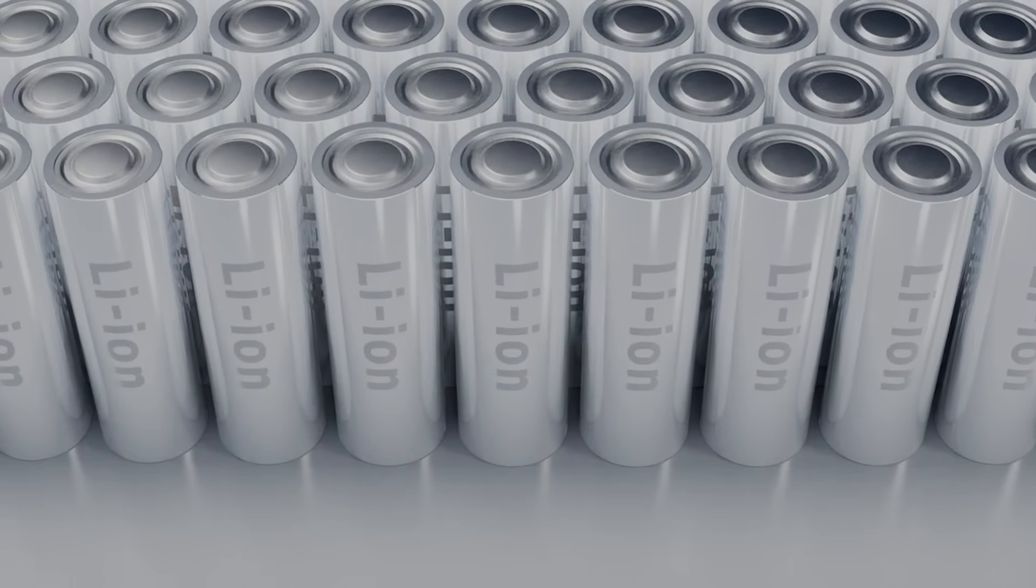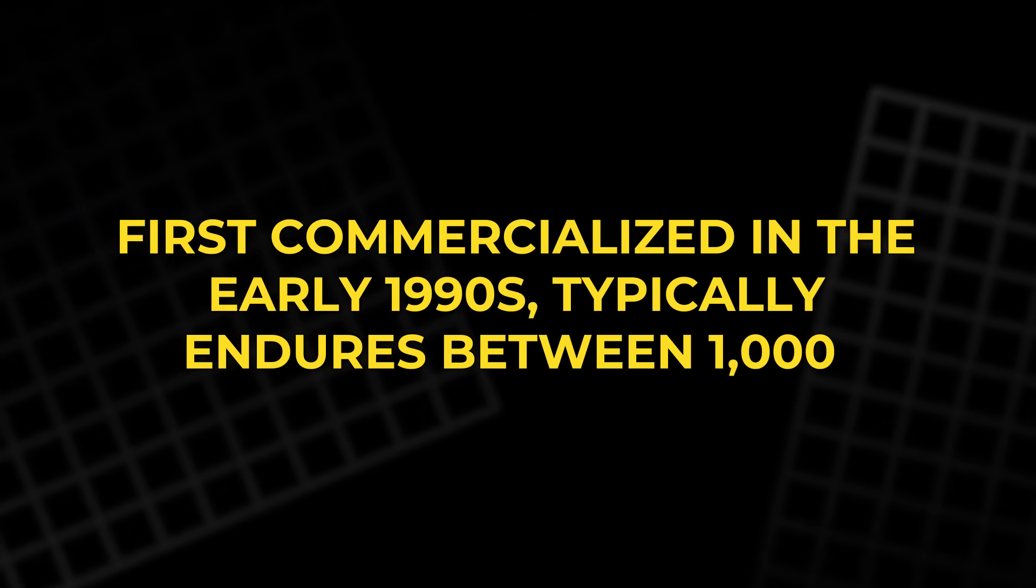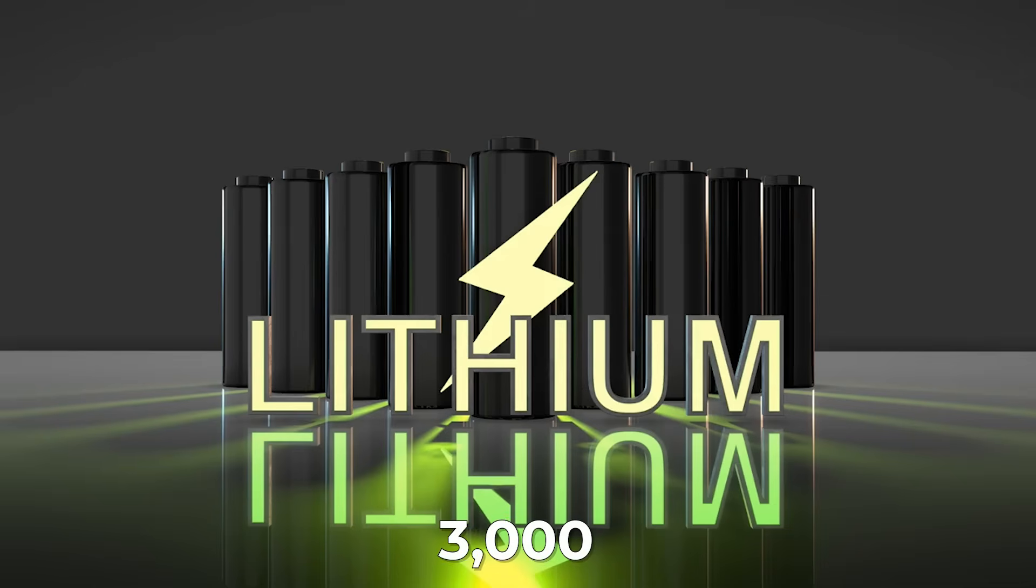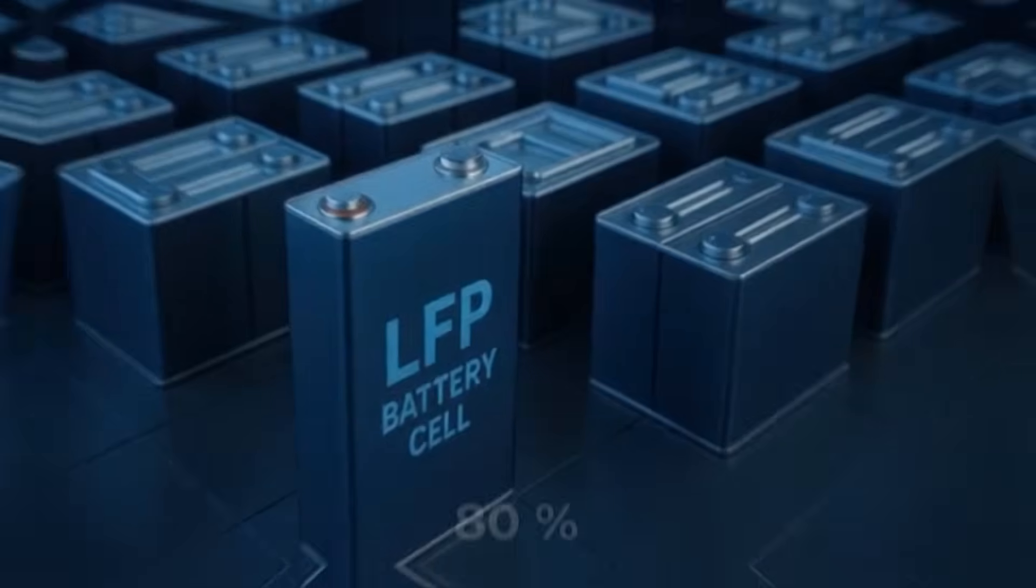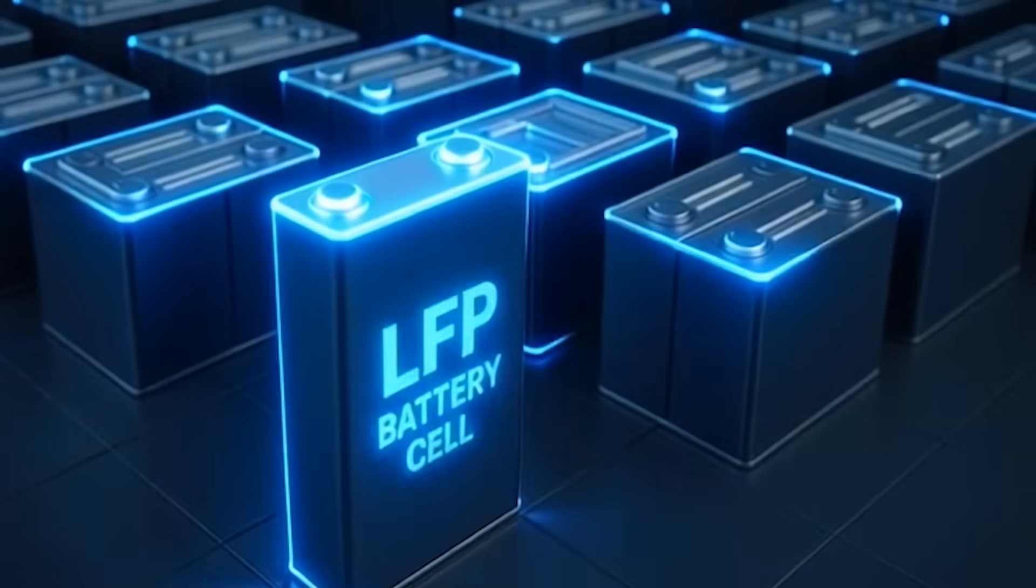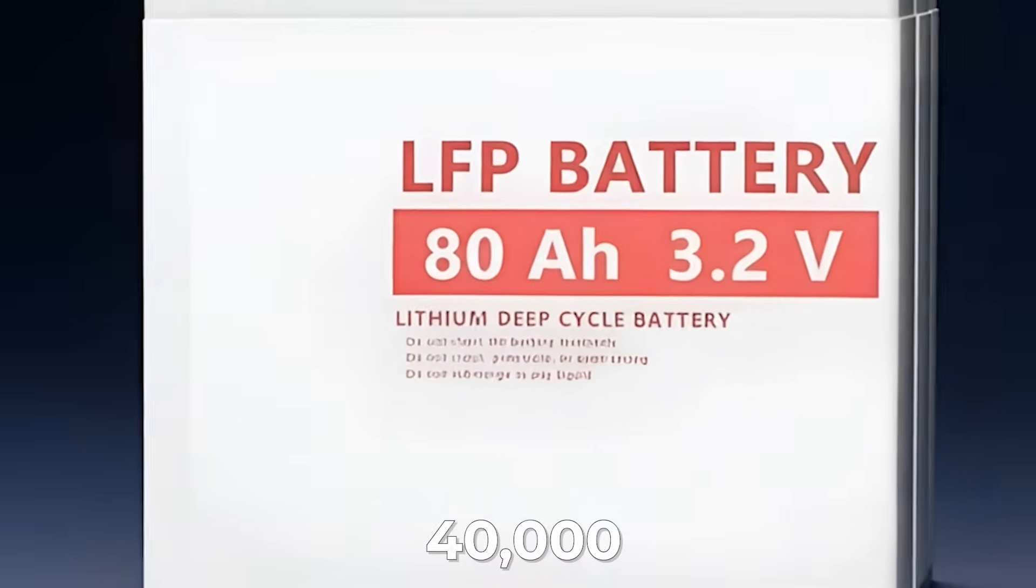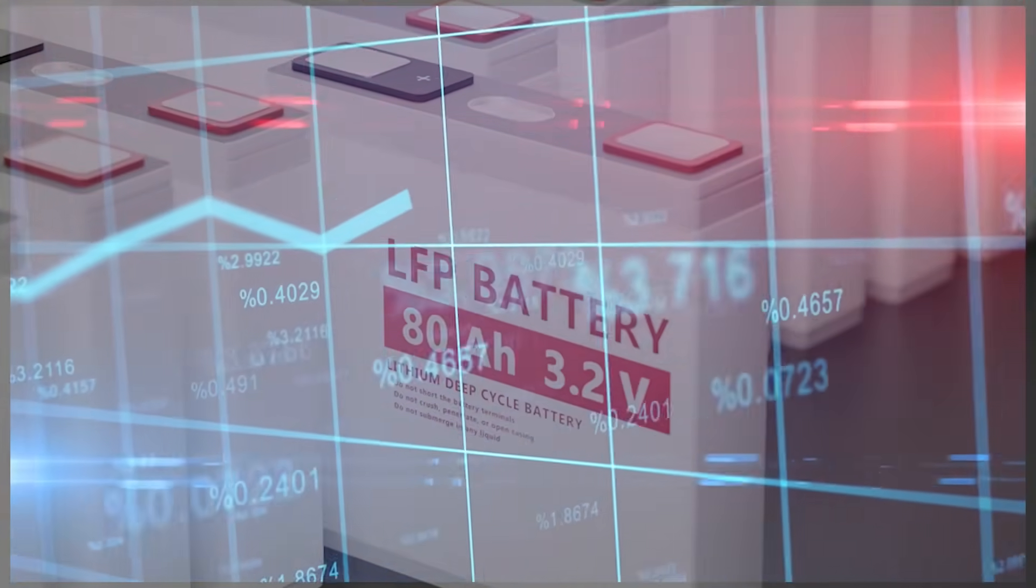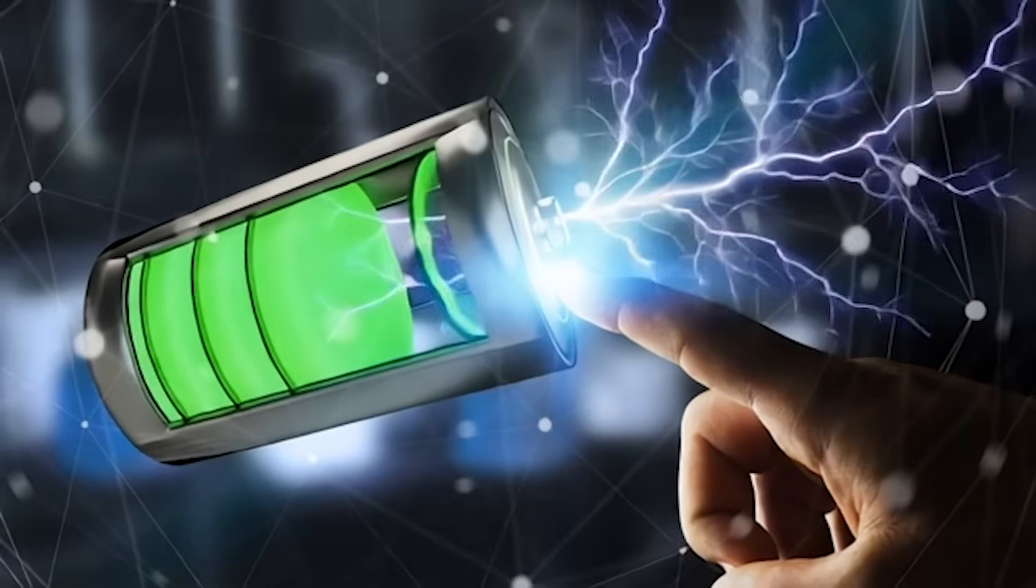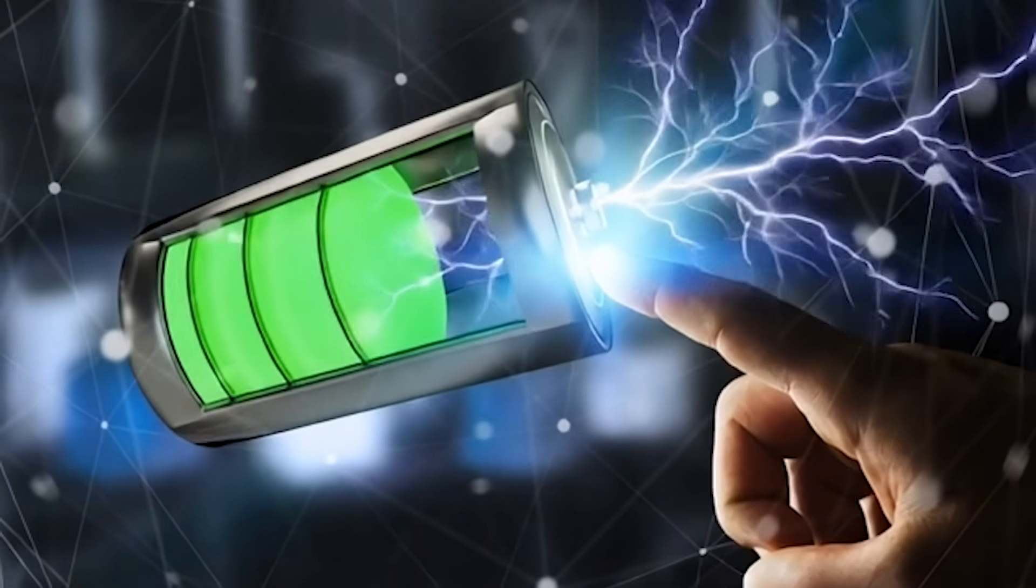To put this progress in perspective, lithium-ion technology, first commercialized in the early 1990s, typically endures between 1,000 and 3,000 full cycles before reaching 80% capacity. Even modern LFP cells rarely exceed 10,000 cycles. Hitting 40,000 cycles while maintaining above 90% retention is beyond anything on the commercial market today. It's no exaggeration to call this the longest-lasting rechargeable battery ever recorded.